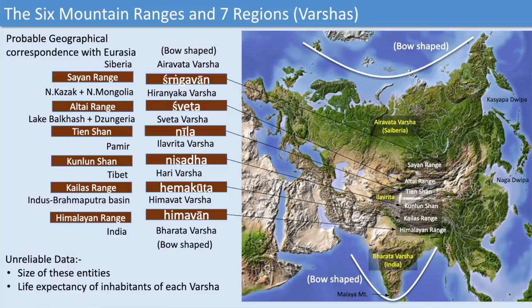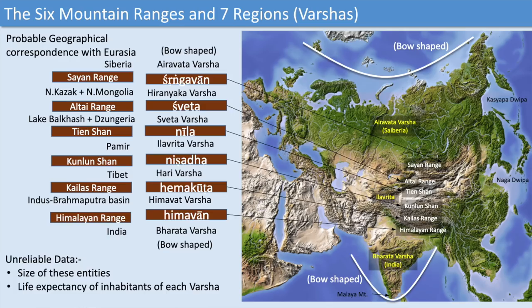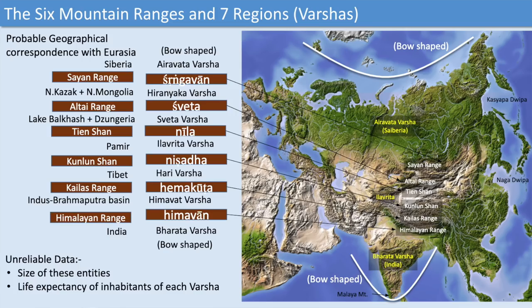The Tien Shan mountains bound the Shweta Varsha region and are called Nila mountains — if you take a photograph of the Tien Shan today, you can see it has a bluish color. The Altai range region is Shweta Varsha — even today it is whitish in color due to snow. To the north is the Shringavan range. Airavata Varsha is also described as bow-shaped, corresponding to the Siberian region which is likewise bow-shaped. The geography Sanjaya describes corresponds to Eurasia, focusing from Kanyakumari northward to the polar north.